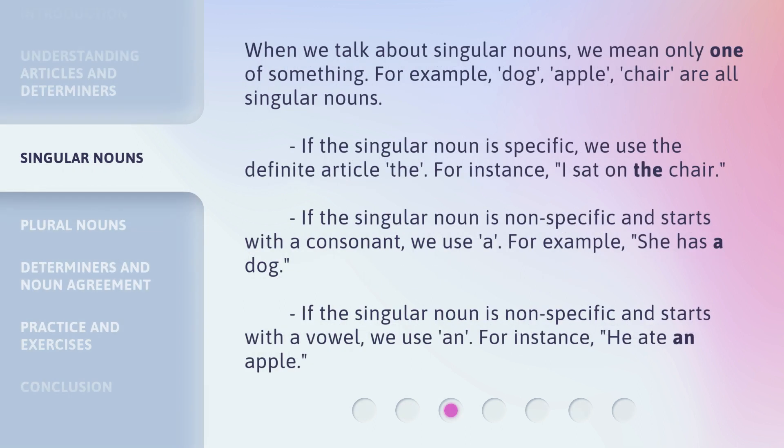When we talk about singular nouns, we mean only one of something. For example, dog, apple, chair are all singular nouns. If the singular noun is specific, we use the definite article, the. For instance, I sat on the chair. If the singular noun is nonspecific and starts with a consonant, we use a. For example, she has a dog. If the singular noun is nonspecific and starts with a vowel, we use an. For instance, he ate an apple.